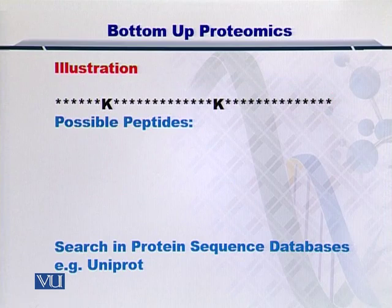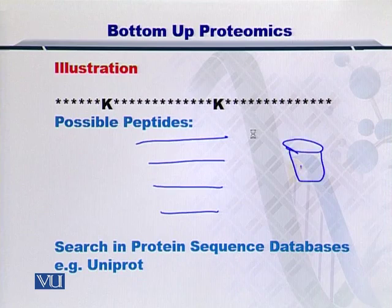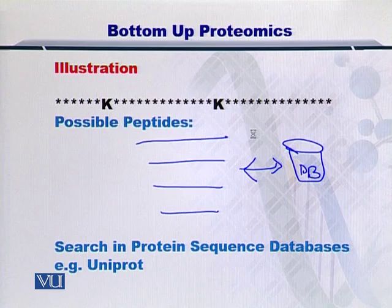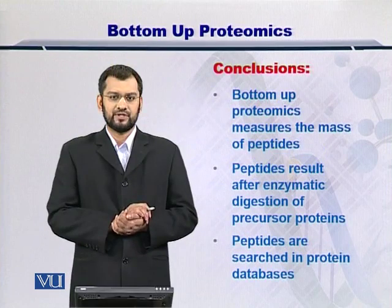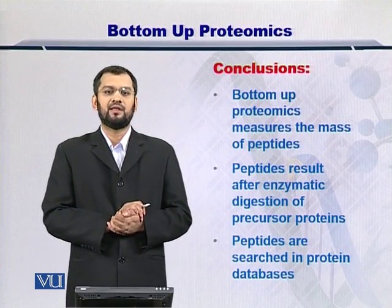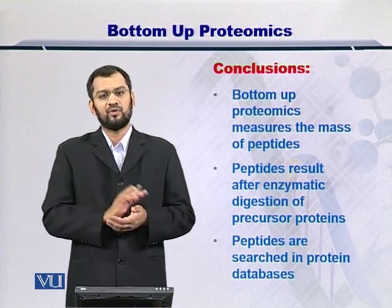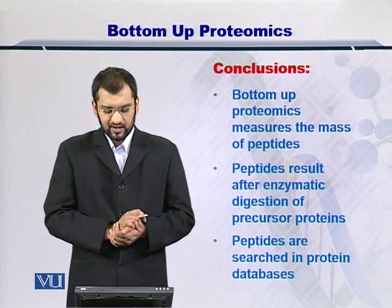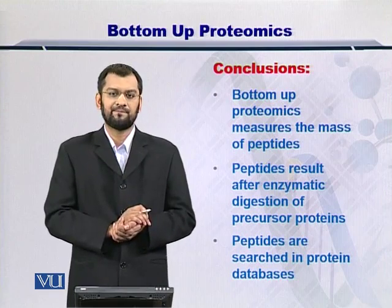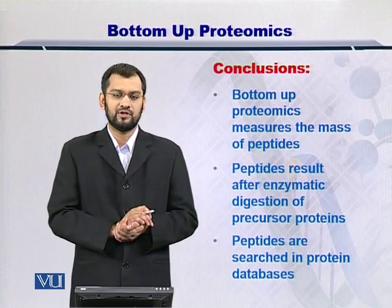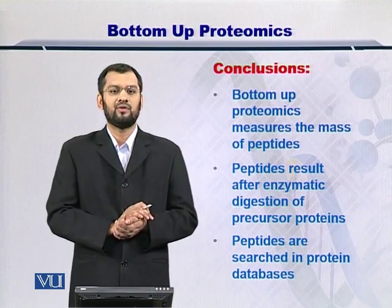Once you have obtained all the possible peptides, then you can search them in the protein database. The matching peptides will tell you which protein they came from. These sequence databases can be SwissProt or UniProt or any other protein sequence database of your choice. In conclusion, bottom-up proteomics looks at the enzymatic digestion products — that is, the peptides — and tries to search them in the protein sequence databases. The peptides that result from this match are actually going to help you identify which precursor protein was there in the sample.